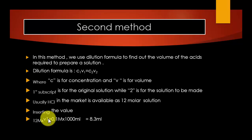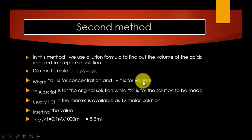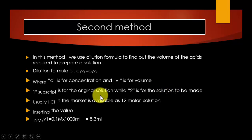There is also a second method. In this method, we use the dilution formula to find the volume of acid needed. The dilution formula is C1V1 = C2V2, where C is concentration and V is volume. Subscript 1 is for the original solution, while subscript 2 is for the solution to be made.